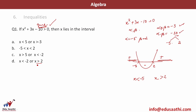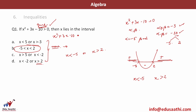So x has to be greater than 2 or less than minus 5. Note: if the question were x² plus 3x minus 10 less than 0, the answer would be x in the range minus 5 to 2, since the function is negative between the roots.